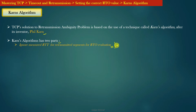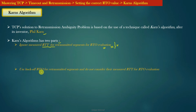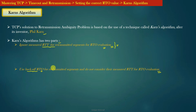Kahn's algorithm is very simple — it states that do not consider any RTT for retransmitted segments. We discussed in the previous lecture that TCP had ambiguity regarding choosing the correct value of RTT. So this point simply says: if you have confusion regarding choosing a correct RTT value, simply do not make a choice. The second part of Kahn's algorithm says: use backoff RTO for retransmitted segments and do not consider their measured RTT for RTO evaluation. Whenever segments are retransmitted, we apply the backoff algorithm over RTO using exponential backoff.